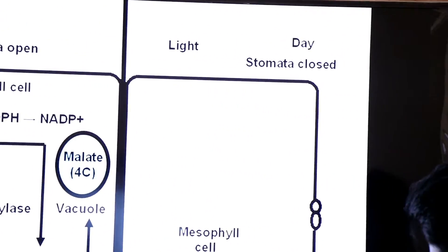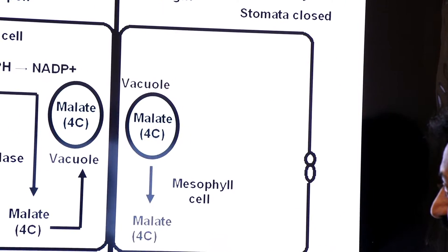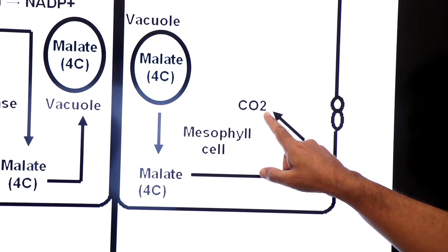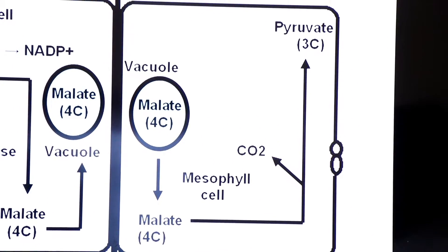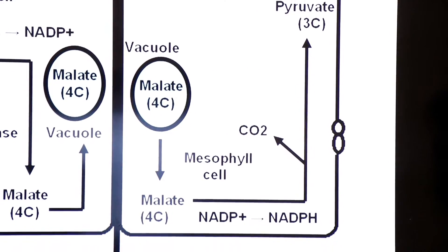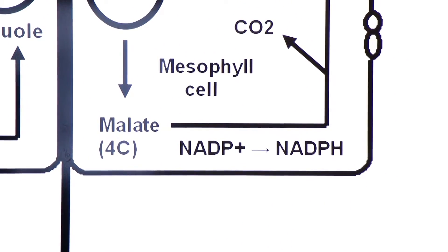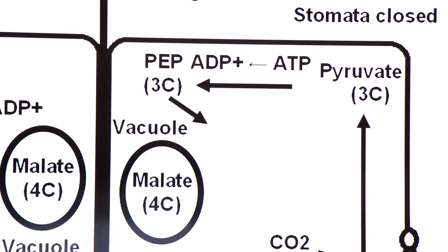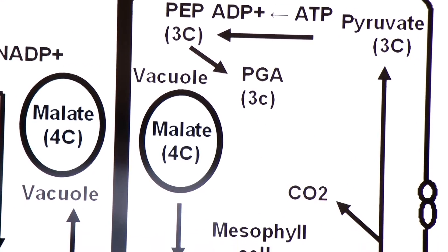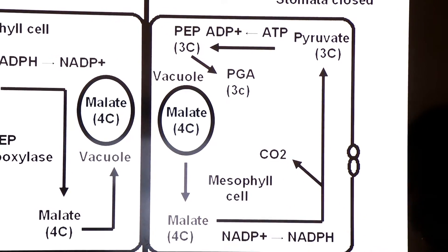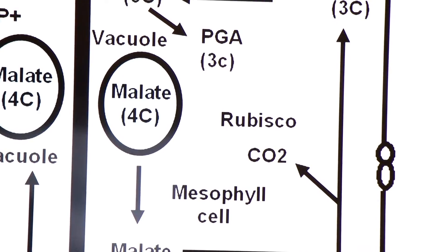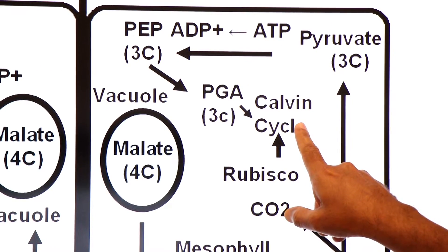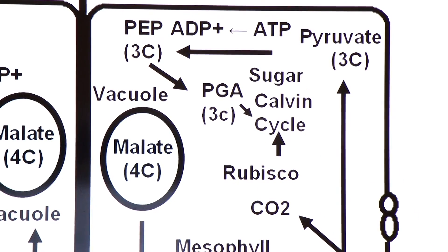When daytime comes, in the presence of light, the vacuole releases that malate. The malate comes out of the vacuole and undergoes decarboxylation, producing carbon dioxide and creating a 3-carbon molecule — pyruvate. During this step, NADP is reduced to NADPH. This pyruvate is further converted into PEP — phosphoenolpyruvate — by consumption of ATP. Then it is further converted into PGA — 3-phosphoglycerate. The released carbon dioxide is added to ribulose bisphosphate by the enzyme Rubisco and fed into the Calvin cycle to make sugar.